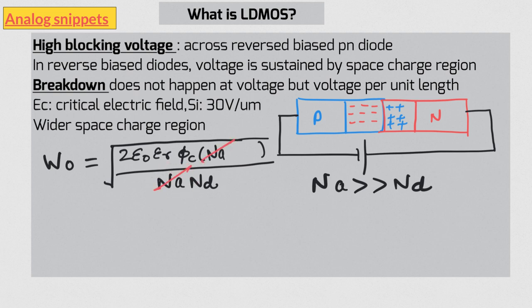So the end result is that if two sides are unequally doped, then width of space charge region is dictated by the lightly doped region, and it is inversely proportional to the square root of doping concentration. The key takeaway is that a diode with high reverse breakdown voltage has a region with very light doping.